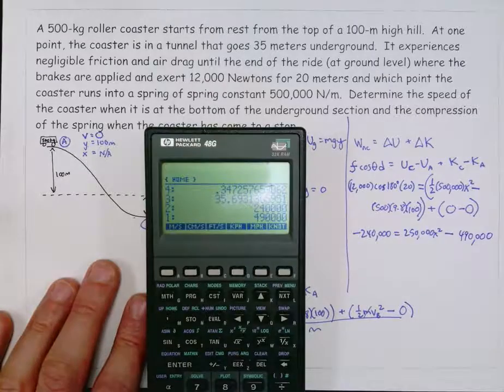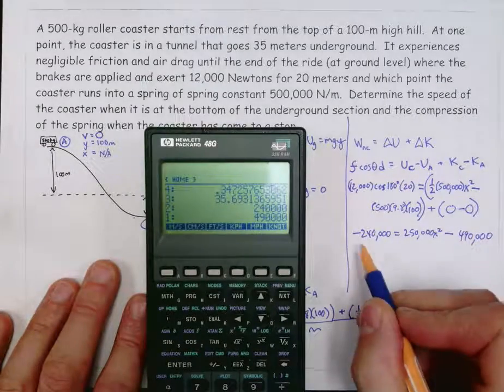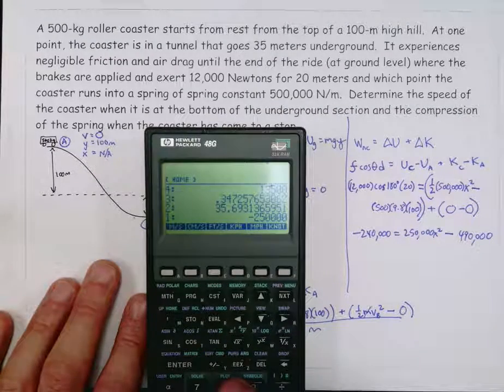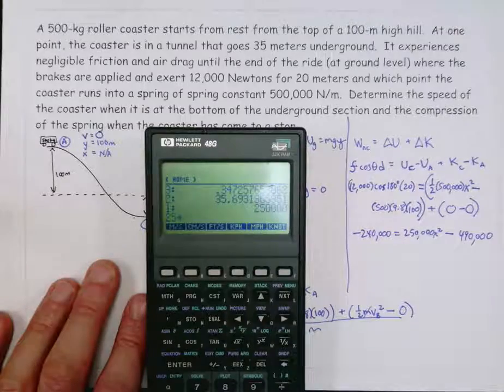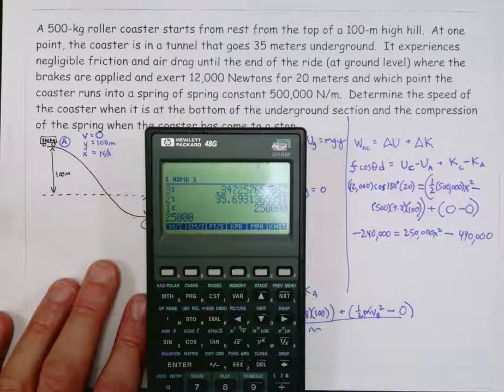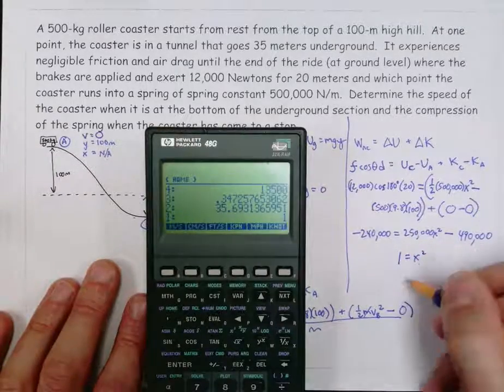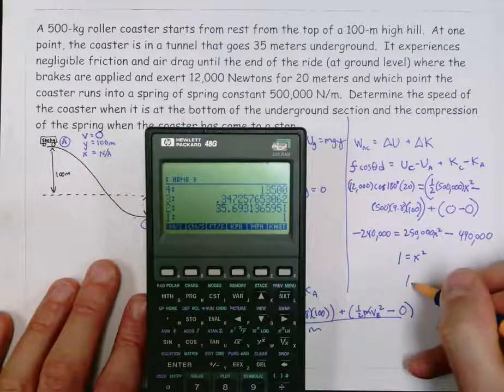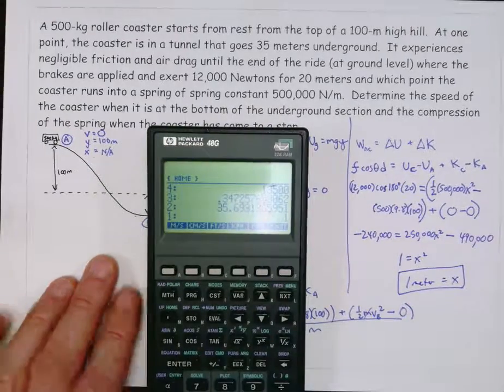And so then just finishing up the algebra, going to move this over to the other side. And I'm going to divide by 250,000. That actually gives me 1. 1 equals x squared. So that, of course, means that 1 meter is the answer for x. The spring will be compressed 1 meter.